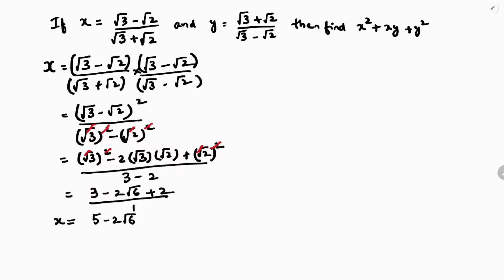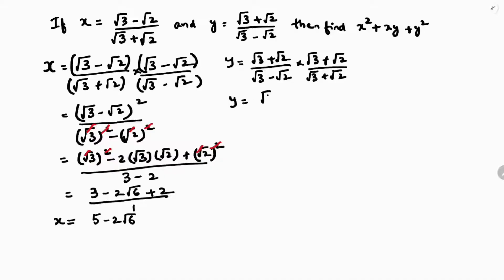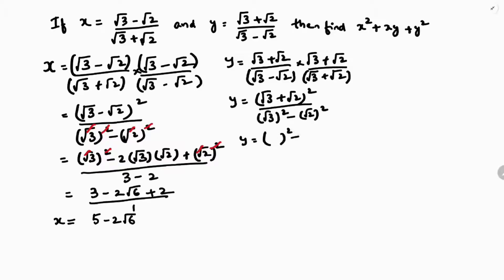Since y is exactly the reciprocal of x, we rationalize similarly. y equals (√3 plus √2) by (√3 minus √2), multiplied by (√3 plus √2) by (√3 plus √2). The numerator becomes (√3 plus √2) whole square, which is of the form a square plus 2ab plus b square, giving 3 plus 2√6 plus 2.